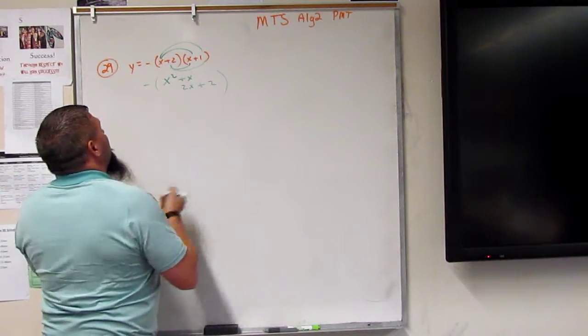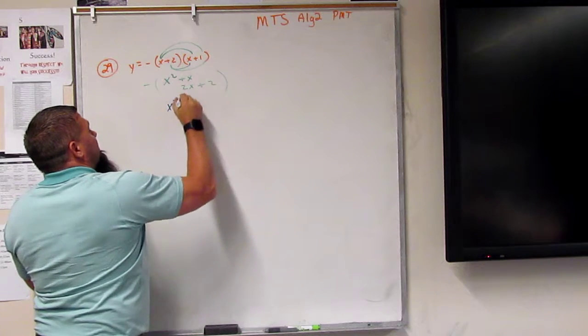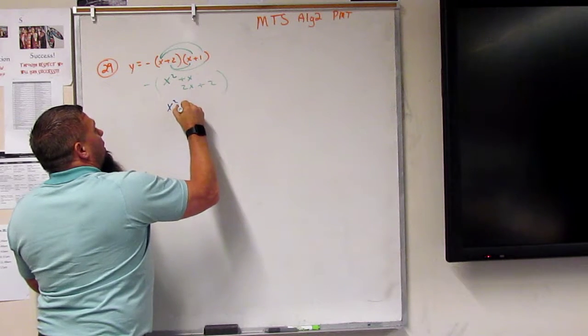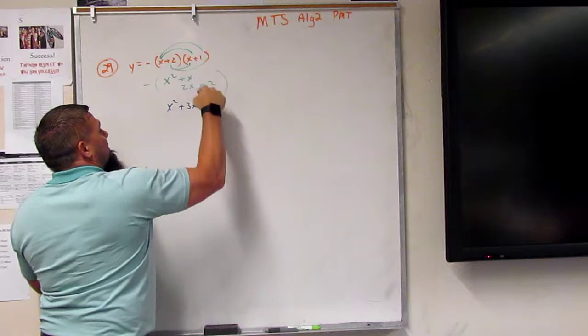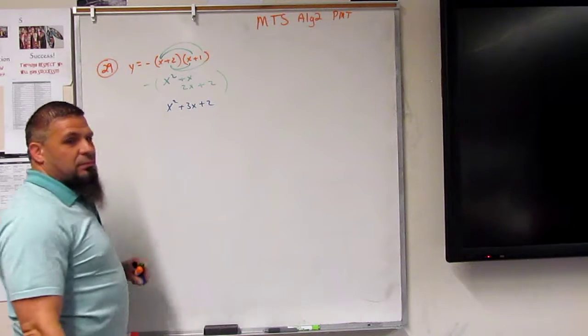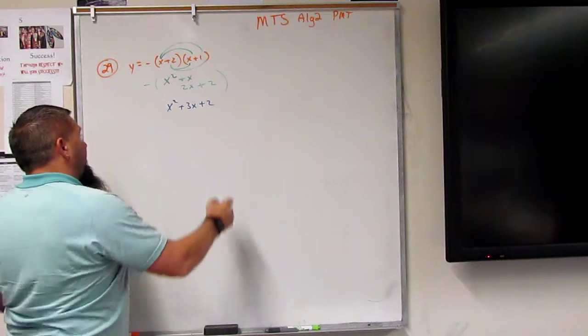Right now we're going to add these up. So this gets x squared, this becomes plus 3x, this becomes plus 2. Simple pimple.